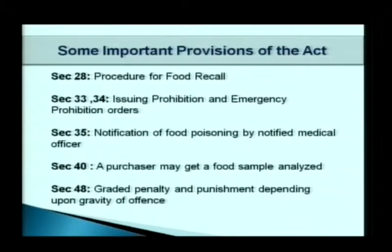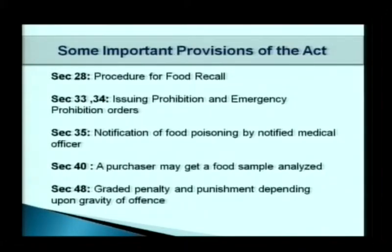Section 23 and 24 deal with prohibition and emergency prohibition orders. If a food is found to be unsafe on analysis, it may be prohibited from sale or production. In the case of food found to be very injurious to health, an emergency prohibition order is issued by the designated officer immediately, without waiting for a prohibition order from the food safety commissioner of the state.